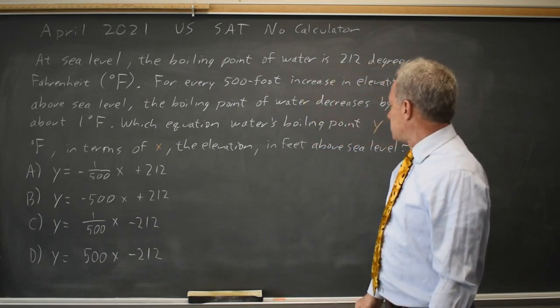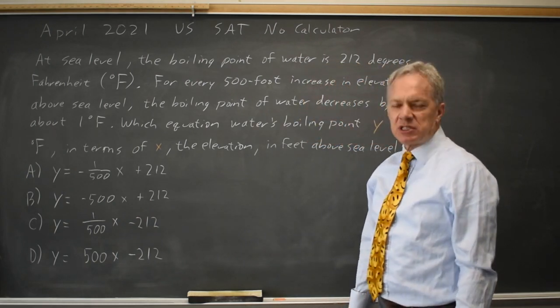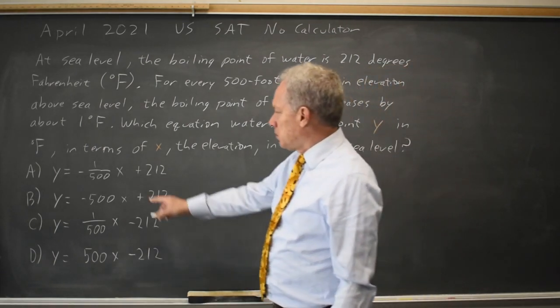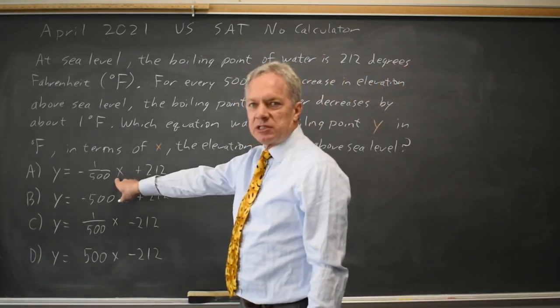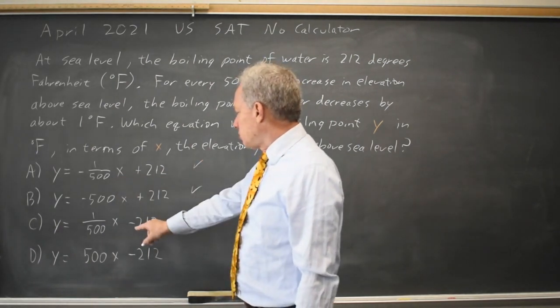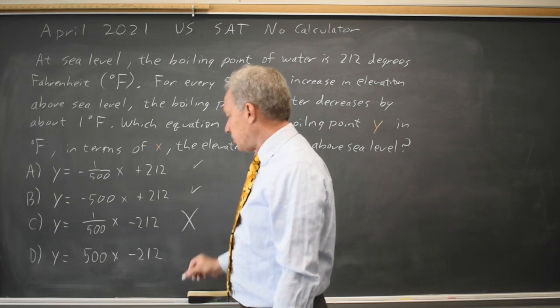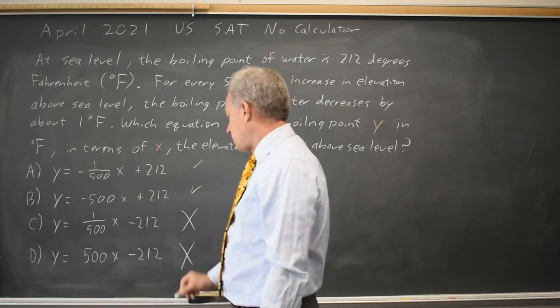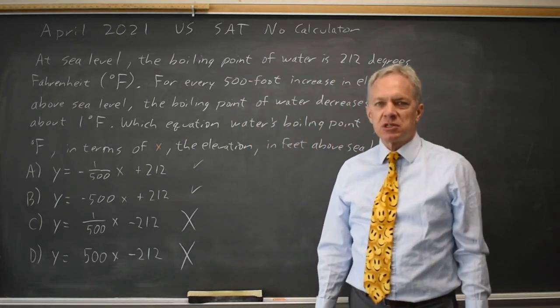Since X is the height in feet above sea level, at X equals 0, we should get 212. At 0, choice A gives us 212, and choice B gives us 212. This could be correct. Choice C gives us negative 212 degrees, which we know is not correct, and choice D also gives us negative 212, which is not correct.